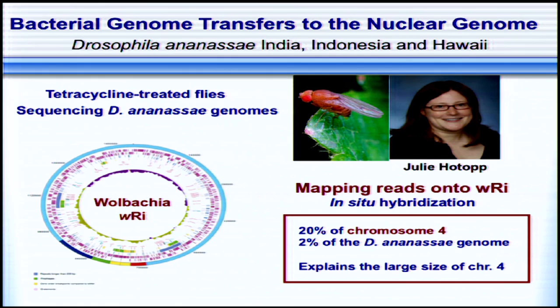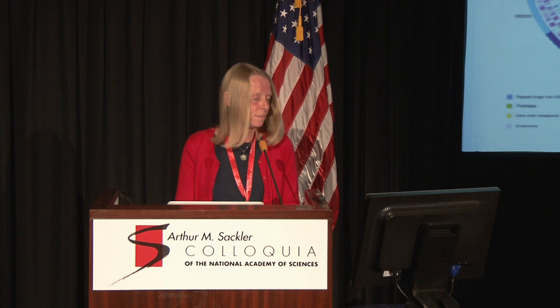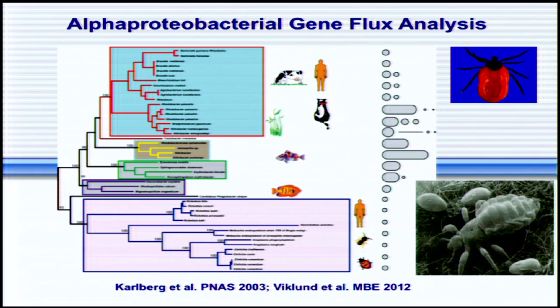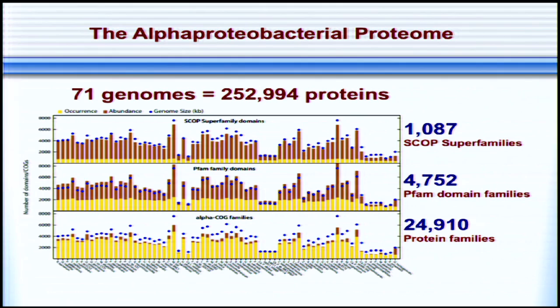It has also been shown in several other systems that bacteria may actually transfer their whole genome into the host nuclear genome. We have studied these and other endosymbionts like Bartonella, and people have continued to sequence alpha proteobacterial genomes. Every now and then we have done a phylogeny and mapped gene content to study the flux of genes. In our most recent attempt, we looked at 71 genomes representing about 250,000 proteins, sorted into 1,000 SCOP superfamilies, 5,000 PFAM protein families, and 25,000 protein families, and mapped those onto a reference tree to infer the flux of different protein families.